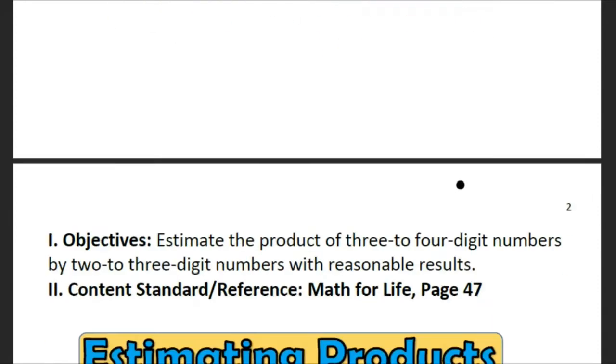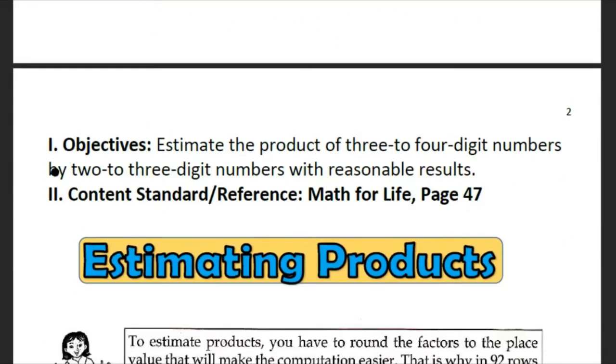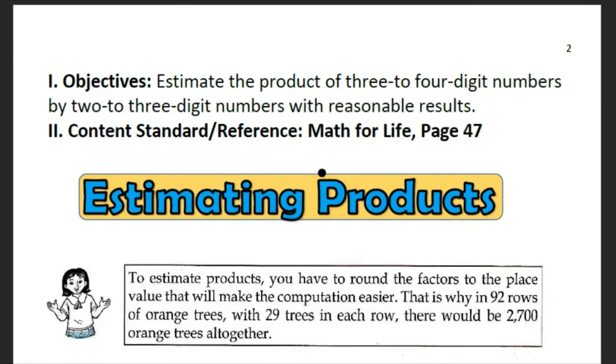Now let's proceed to the second page. We have here objectives. At the end of this lesson, you are going to estimate the product of 3 to 4 digit numbers by 2 to 3 digit numbers with reasonable results. The reference that I am using for this lesson is Math for Life page 47.